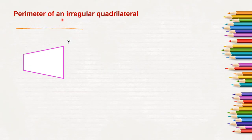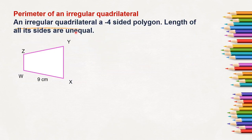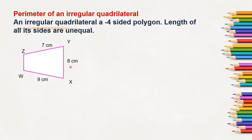Next, the perimeter of an irregular quadrilateral. This is an irregular quadrilateral where the lengths of all sides are unequal. It is also a 4-sided polygon, but the lengths of all its sides are unequal. WX is 8 cm, XY is 9 cm, YZ is 7 cm, and ZW is 6 cm. All the lengths of all sides are unequal.